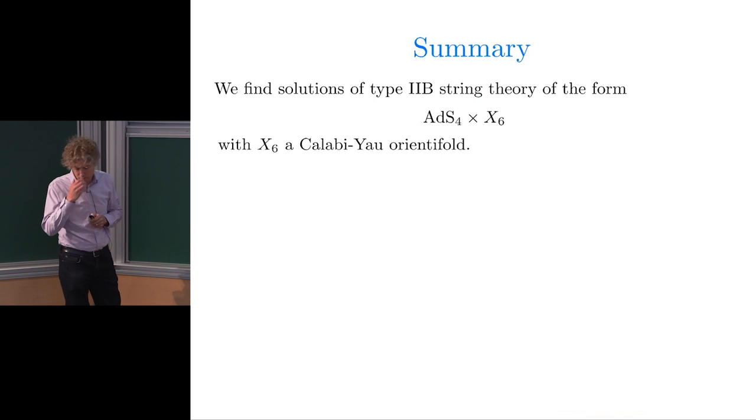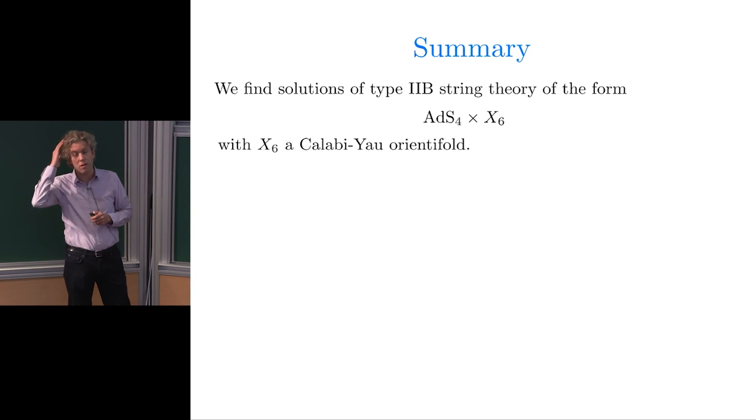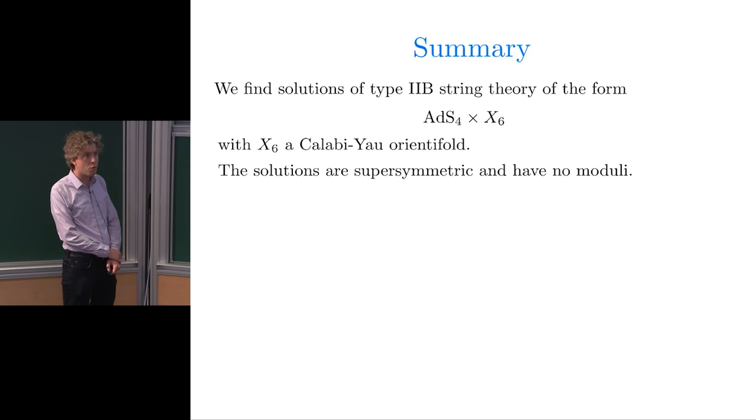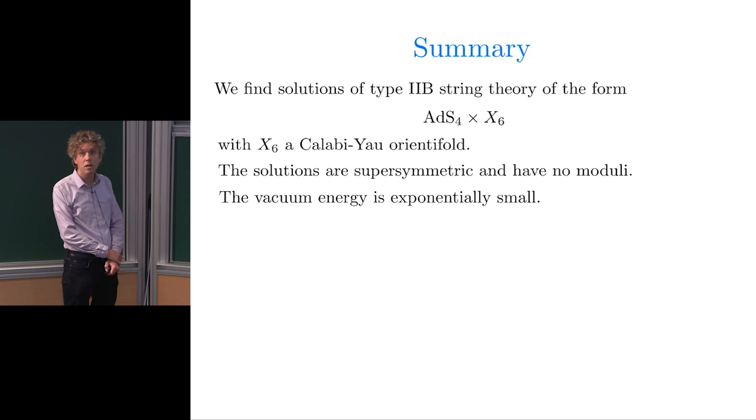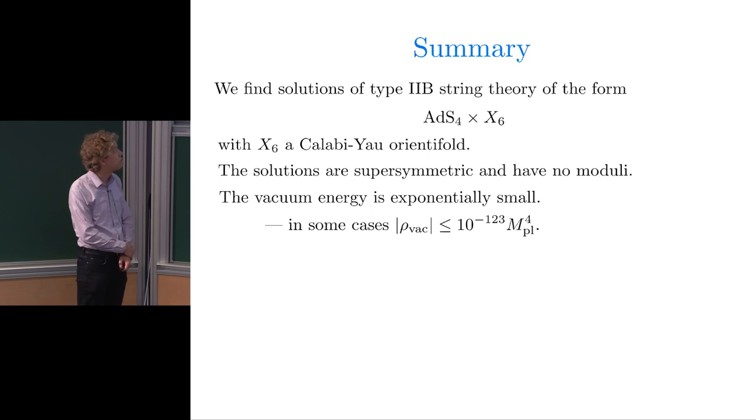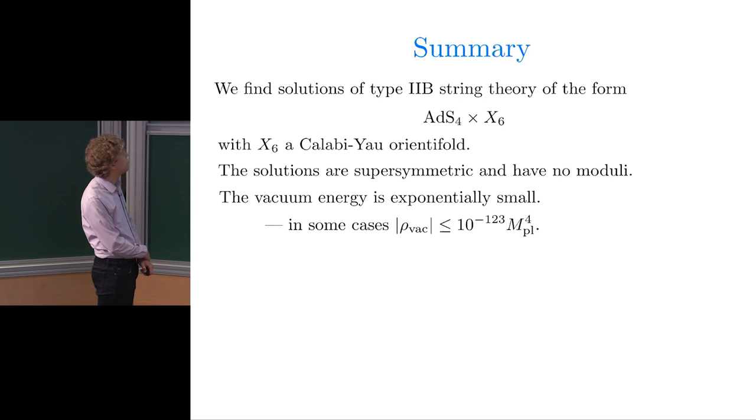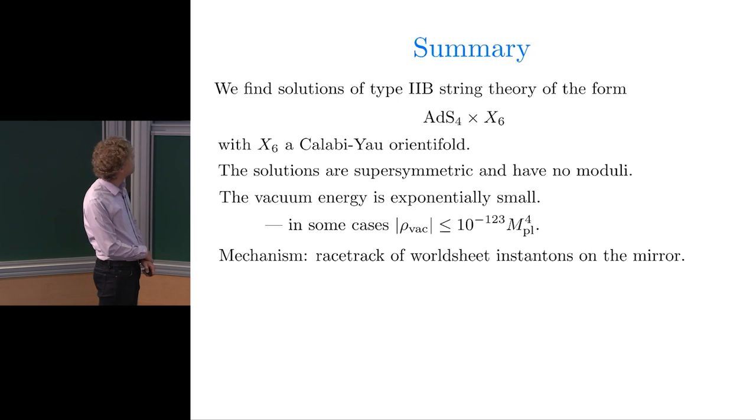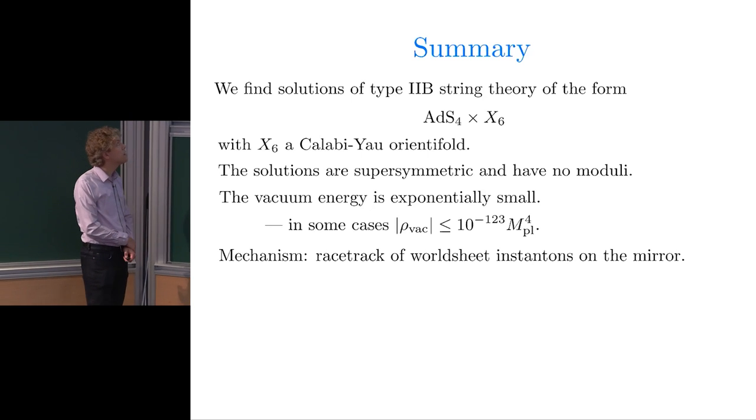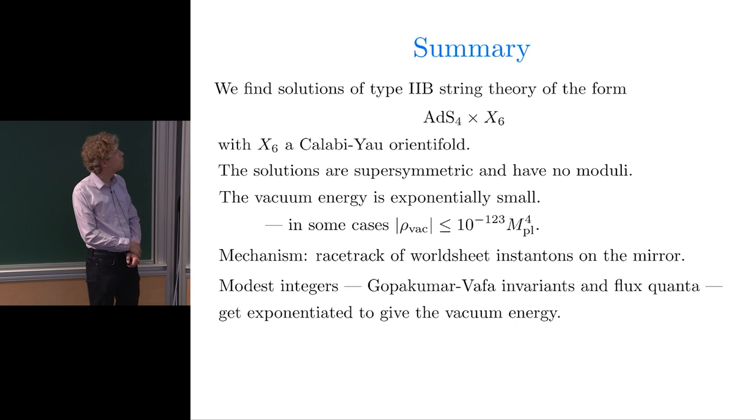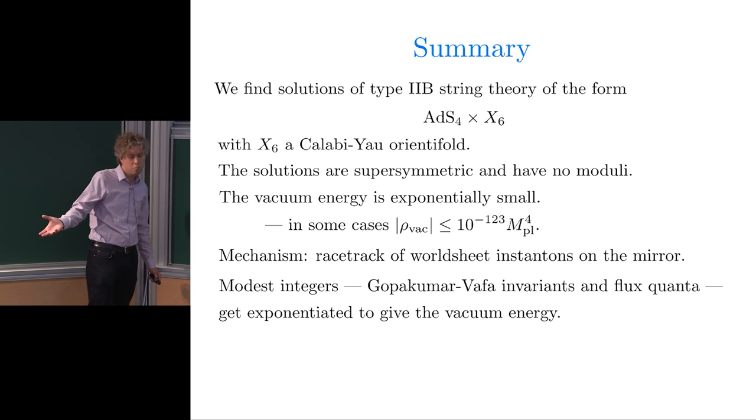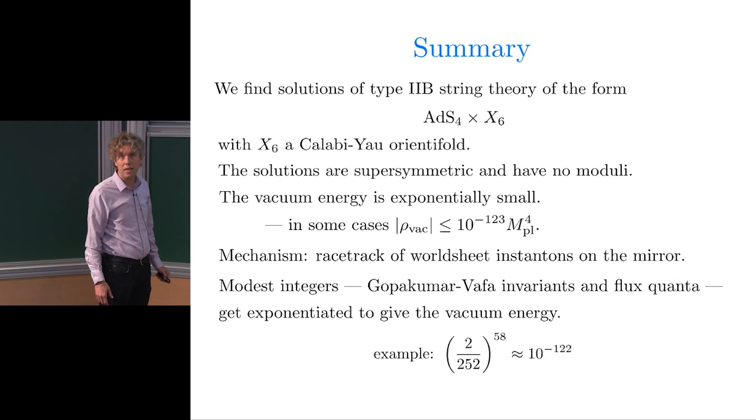Here's a summary of the main claim. We find solutions of type 2B string theory of the form AdS4 cross X6 with X6 a Calabi-Yau orientifold. The solutions preserve 4D n equals 1 supersymmetry. They have no moduli. The vacuum energy is exponentially small, in some cases smaller than 10 to the minus 123. One doesn't have to be fixated on that number. We find plenty of solutions where it's 10 to the minus 20, but this is possible. The mechanism is a racetrack of worldsheet instanton contributions in the mirror Calabi-Yau threefold. Modest integers, Gopakumar-Vafa invariants, and flux quanta get mixed together in a way that exponentiates them.